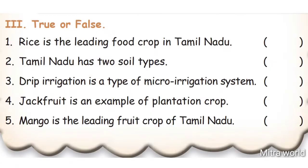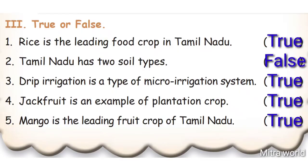Next: True or False. Number 1: Rice is the leading food crop in Tamil Nadu - True. Number 2: Tamil Nadu has two soil types - False.